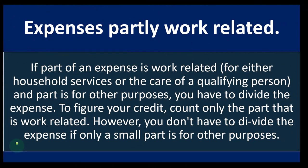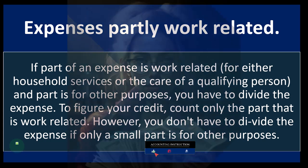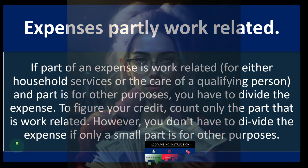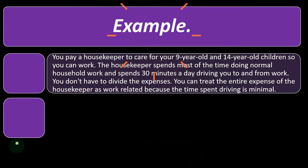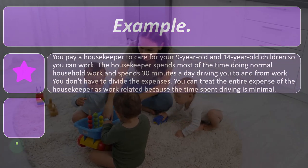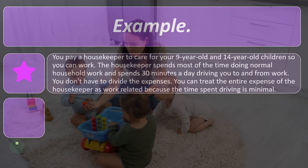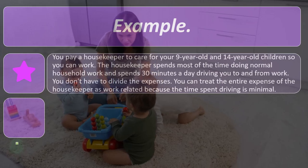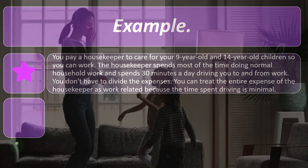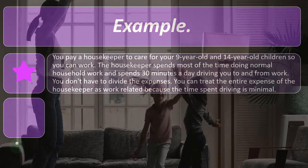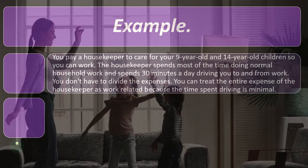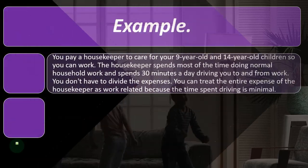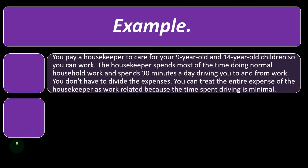However, you don't have to divide the expense if only a small part is for other purposes. For example, you pay a housekeeper to care for your nine-year-old and 14-year-old children so you can work. The housekeeper spends most time on normal household work and spends 30 minutes a day driving you to and from work. You don't have to divide the expenses — you can treat the entire housekeeper expense as work-related because the time spent driving is minimal.